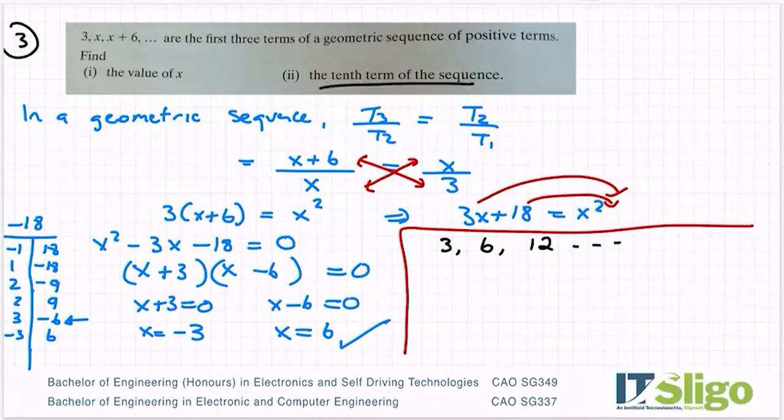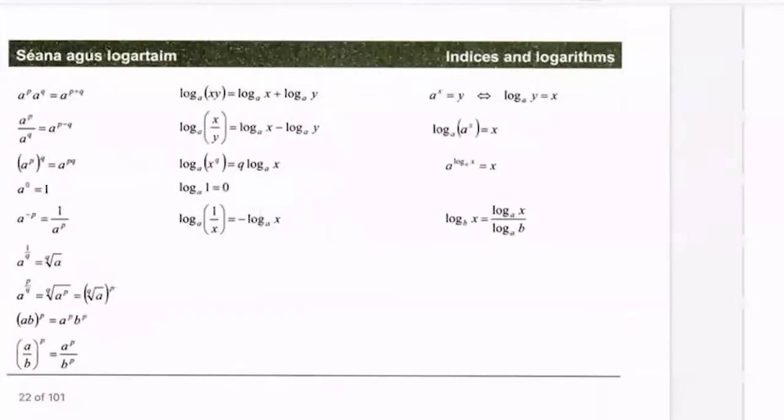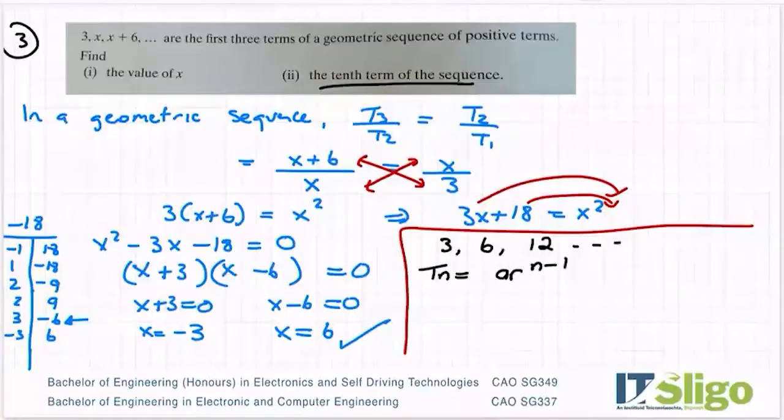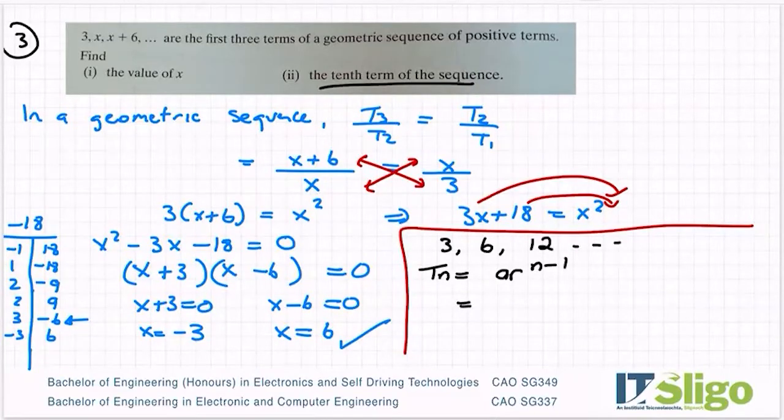I need to find the 10th term. So I'm going to establish a formula for Tn. And to do that, I am using the Tn formula from the log tables for a geometric sequence. Tn is the nth term, a is the first term, r is the common ratio. So a is the first term, which is 3.